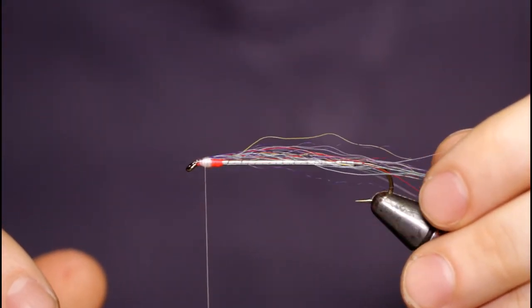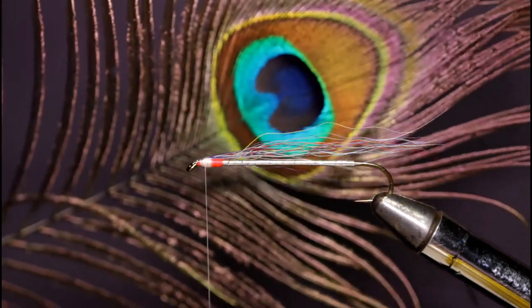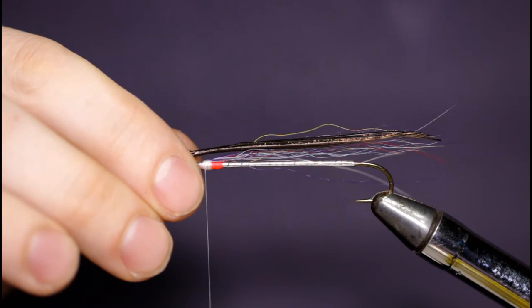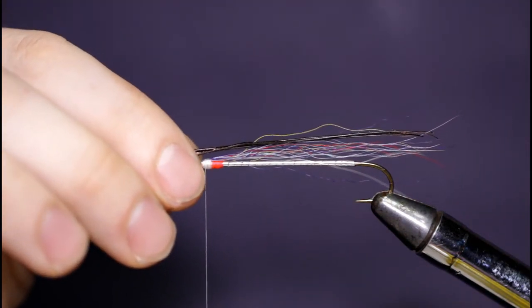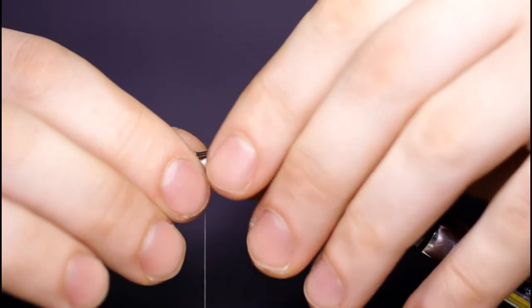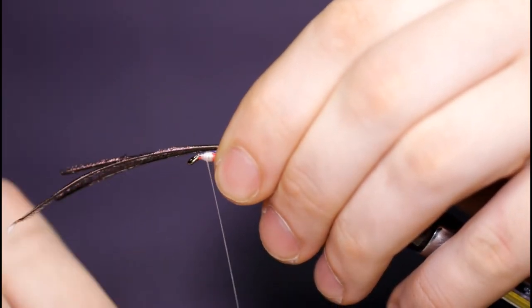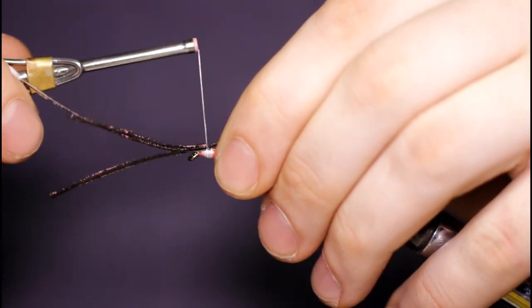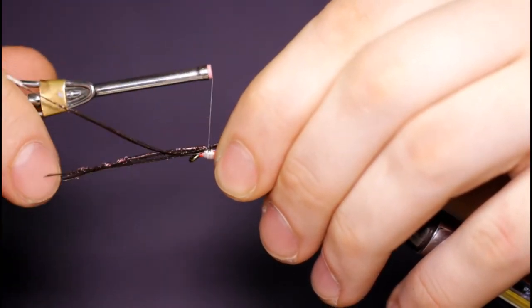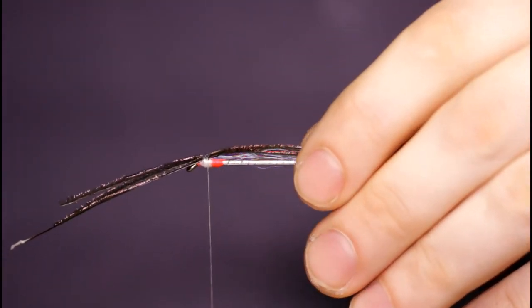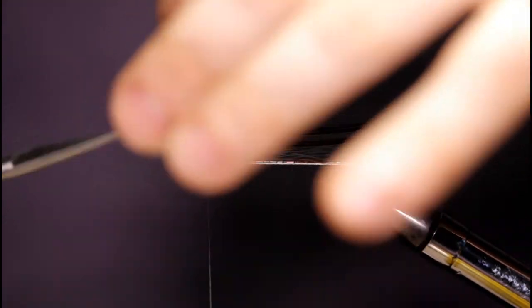The next material is going to be some peacock hurl for a topping. I'm going to set this on same length as the hair, just beyond the rear of the hook. That looks decent so I'll pull these up and snip them off.